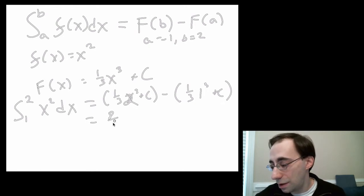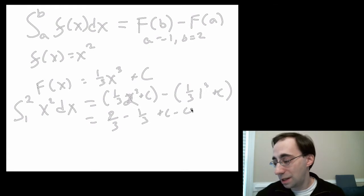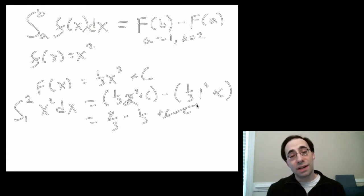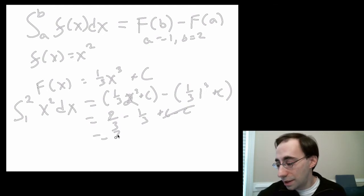This equals 8/3 minus 1/3 plus c minus c. The c's will always cancel, which is why the integral is definite. We have a definite area. There's no uncertainty in terms of some kind of unknown integration constant. It would always cancel in any definite integral, so you can just ignore those.